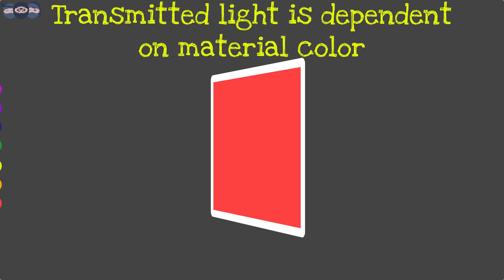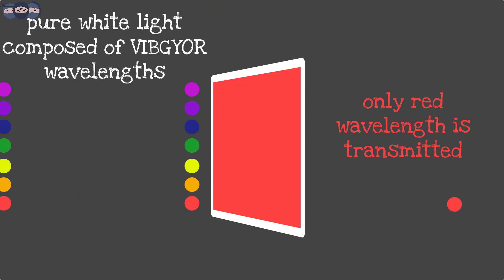For example, red will allow the radiations in the red region to pass and so on.